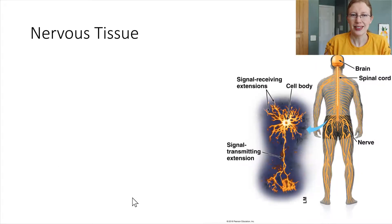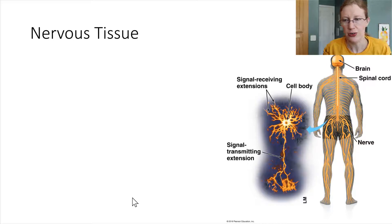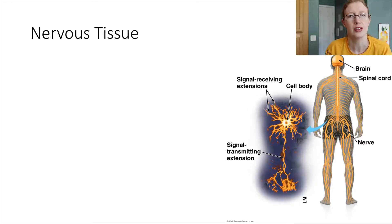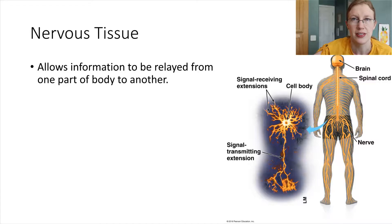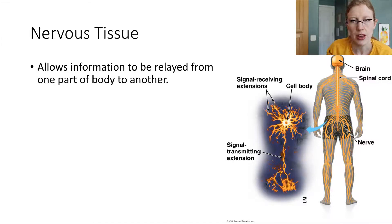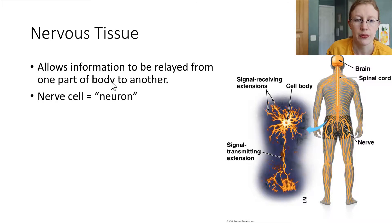Our last and fourth type of tissue is nervous tissue. Nervous tissue is specialized for sending signals — it allows us to send information. It's the neurons that take a signal to muscle cells and tell them when to contract. Neurons are the individual cells that make up nervous tissue.